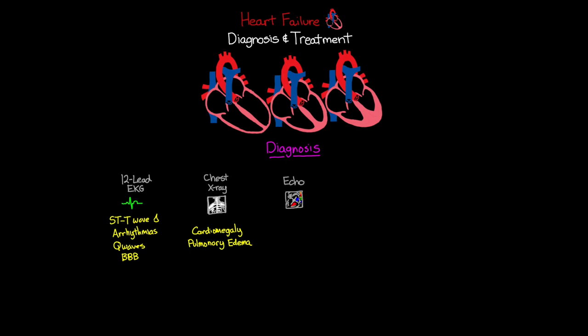The echocardiogram is really the gold standard when it comes to evaluating and diagnosing a patient with heart failure. An echo uses sound waves to take a real-time visual look at the heart, allowing us to evaluate dilation, hypertrophy, valvular disorders, hypo-contractility, and most importantly the patient's ejection fraction. It can also help identify some of the underlying causes.